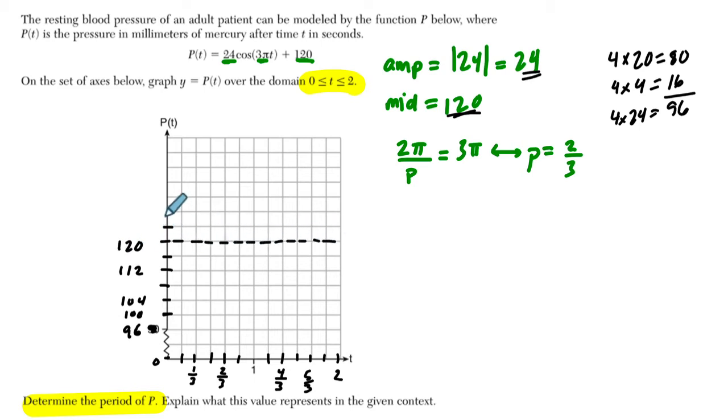And then 124, 128, 132, and the amplitude's 24, so we have to reach 144. Let's see if we can get there. 136, 140, 144. We just made it. So that's our maximum there, and it's right on it.